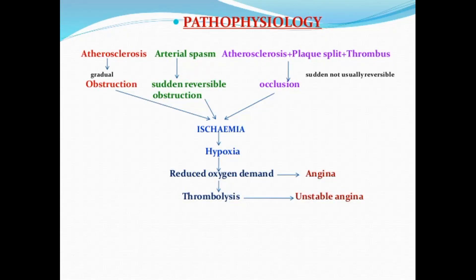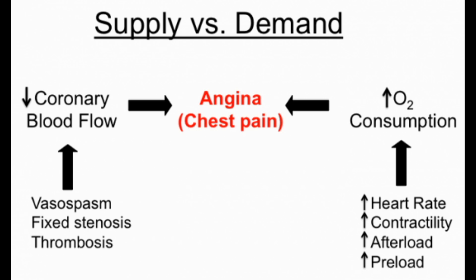In pathophysiology, due to atherosclerosis or arterial spasm, atherosclerosis plus plaque formation leads to ischemia, resulting in hypoxia, and if left untreated may cause necrosis. There is an imbalance between myocardial oxygen supply and demand due to vasospasm, fixed stenosis, or thrombosis, causing decreased coronary blood flow, which leads to angina. Increased heart rate, contractility, afterload, preload, and left ventricular hypertrophy cause increased oxygen consumption, which also leads to angina.